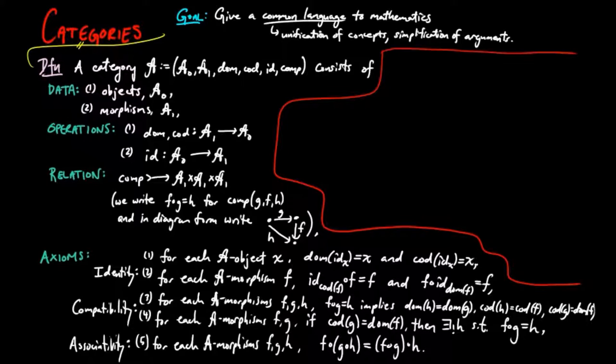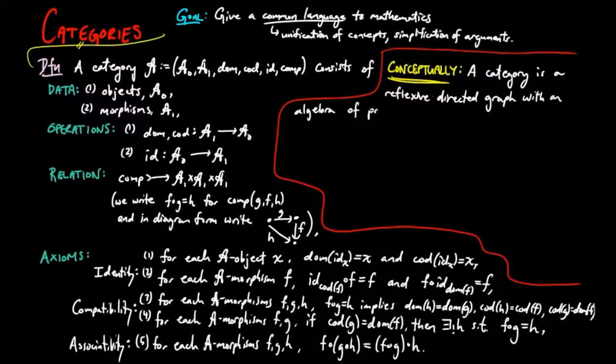Another way to think about a category in a so-called unbiased way is that a category is a reflexive directed graph with an algebra of paths, which assigns to a path of finite length an arrow in the obvious way.